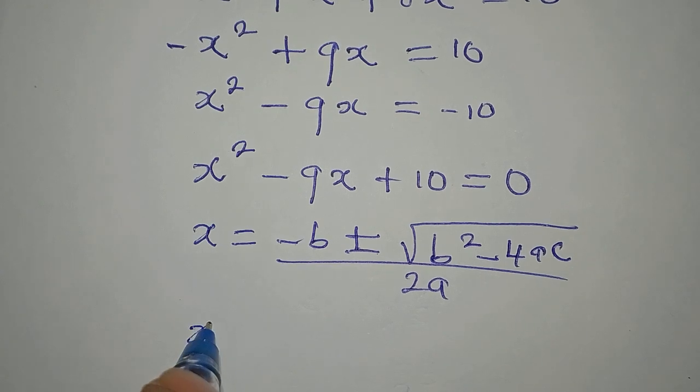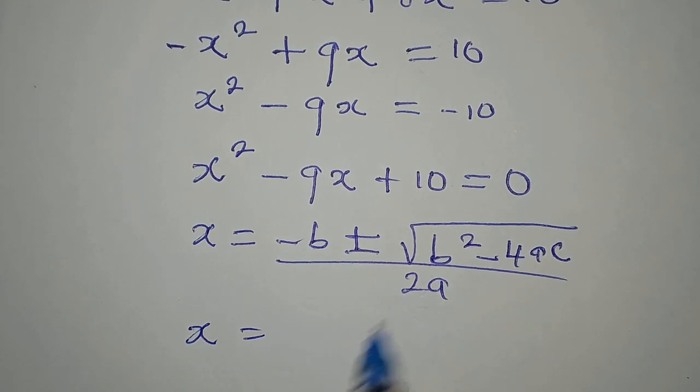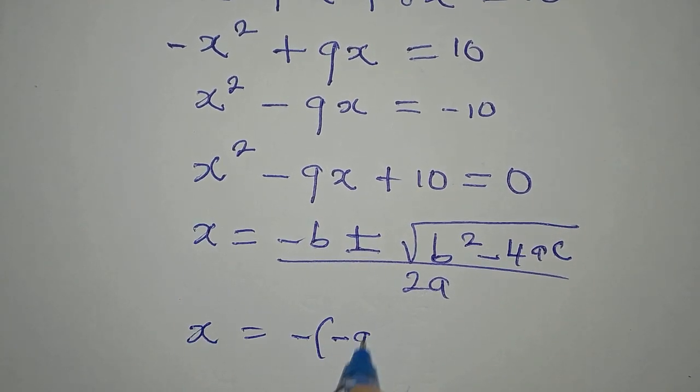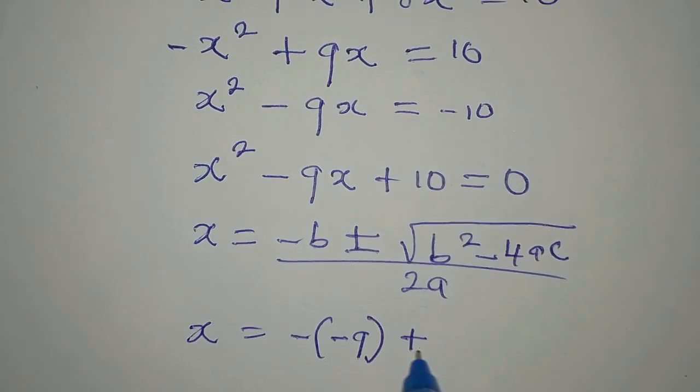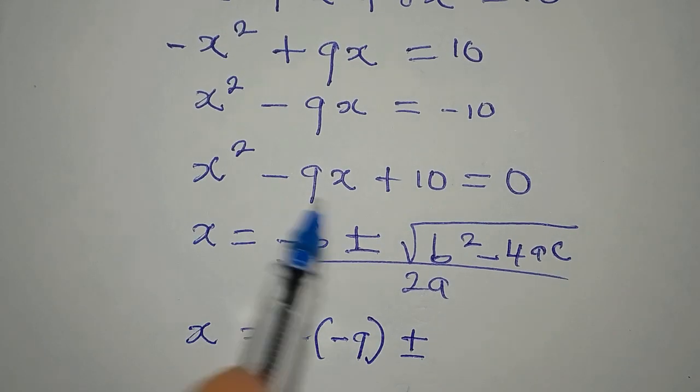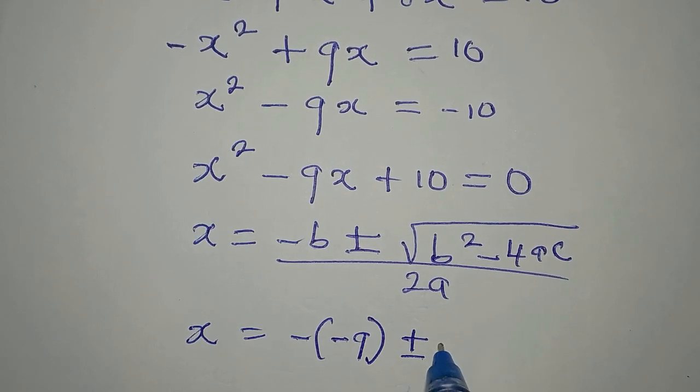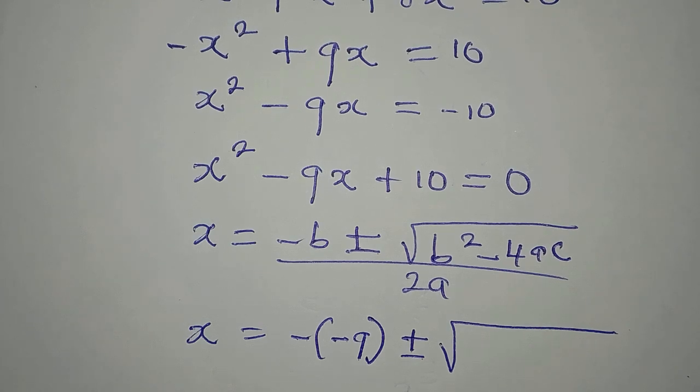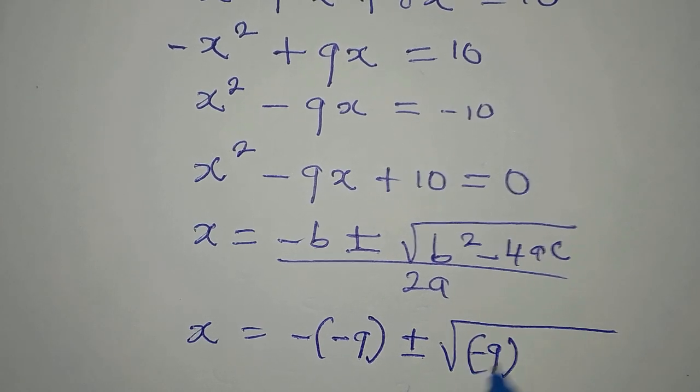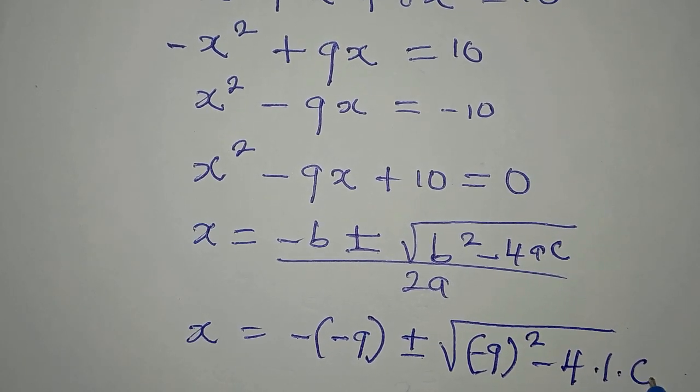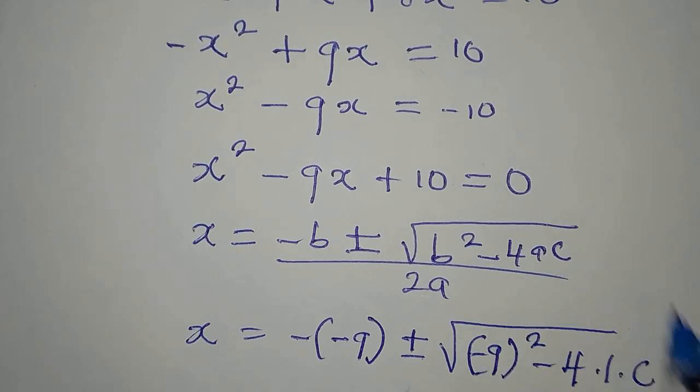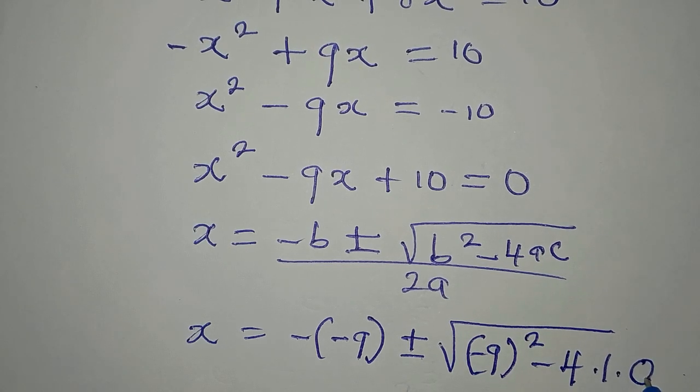Now, what is our x? Minus b becomes minus minus 9, plus or minus, because b is minus 9. Then we have b squared will be minus 9 squared. Then minus 4 times 1 times c. But our c now is 10.